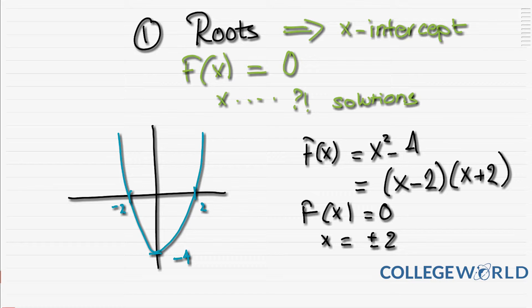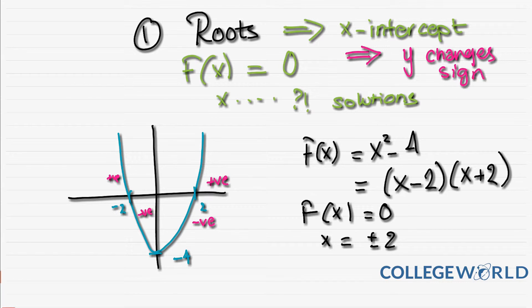What is special about these roots is that here your y is positive, then it hits zero and becomes negative. Here your y is negative, then it hits zero and becomes positive. When you find the root, it's the point before which and after which the signs of y are different. What's special about the root is that y changes sign because it's zero.